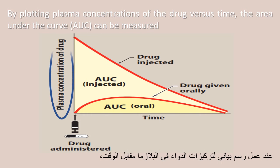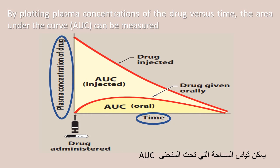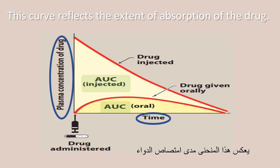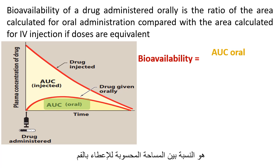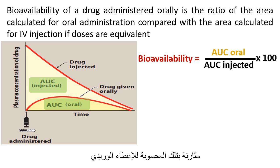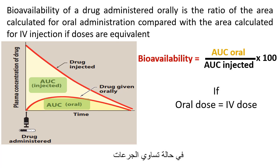By plotting plasma concentrations of the drug versus time, the area under the curve (AUC) can be measured. This curve reflects the extent of absorption of the drug. Bioavailability of a drug administered orally is the ratio of the area calculated for oral administration compared with the area calculated for IV injection, if doses are equivalent.